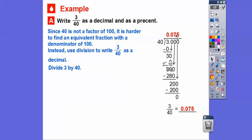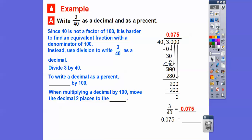So 3 fortieths is the same as 0.075. Let's say this as a math thing. This is tenths, hundredths, thousandths. So this is read as 75 thousandths. To write a decimal as a percent, we multiply by 100. When multiplying a decimal by 100, we just move the decimal place two places to the right. So we'll take this decimal and move it two places to the right, one, two, so it goes right there.